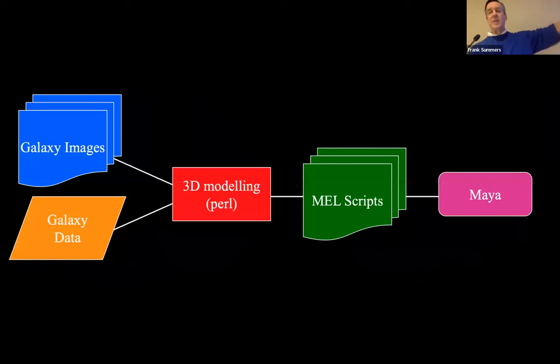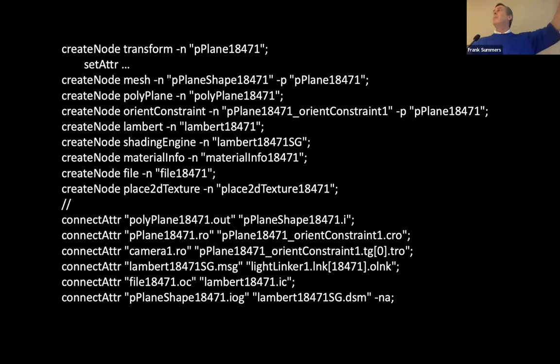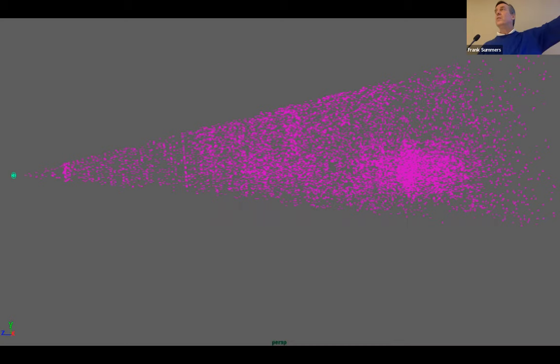My 3D modeling is actually done in Perl, which outputs something called MEL script that goes into Maya. This is create nodes of a mesh and a polyplane and the orient constraint. And then the shader that goes on top of that. You probably haven't dealt with this before, but this is the internals of the Maya code. It writes out this million line text file that you read into Maya and then boom, without doing anything in Maya, I now have my 10,000, 11,000 galaxies in Maya. You're not going to use an interactive 3D tool to place galaxies one by one 5,000 times. So coding, scripting, batch processing.